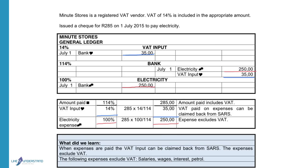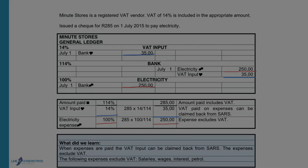The following expenses exclude VAT: salaries, wages, interest, and petrol.